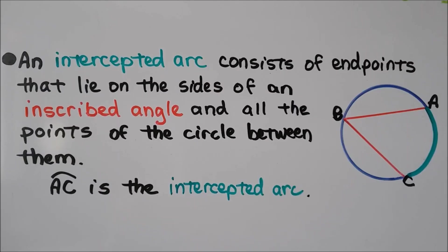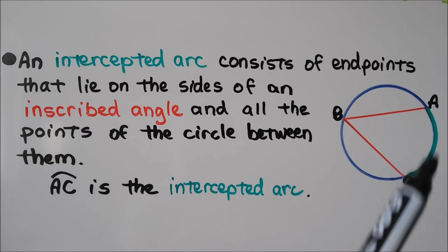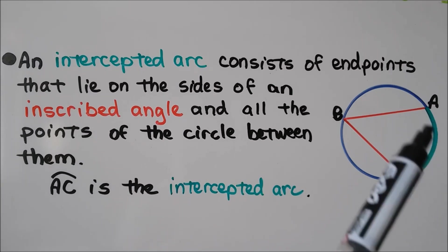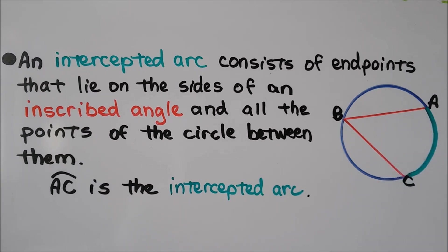An intercepted arc consists of endpoints that lie on the sides of an inscribed angle and all the points of the circle between them. So arc AC here is the intercepted arc of angle ABC.